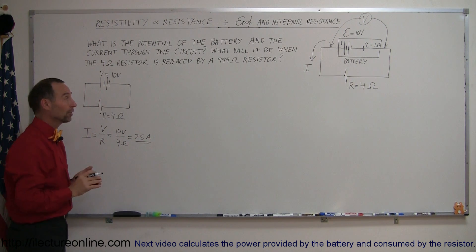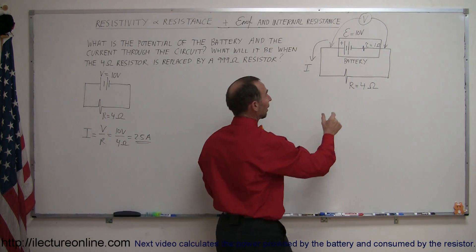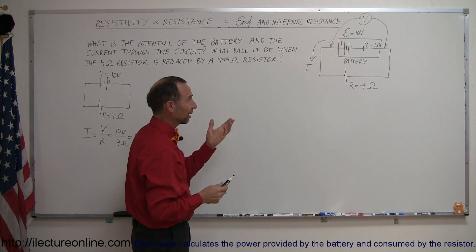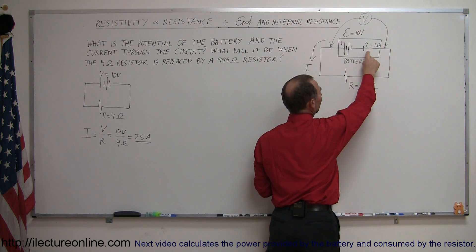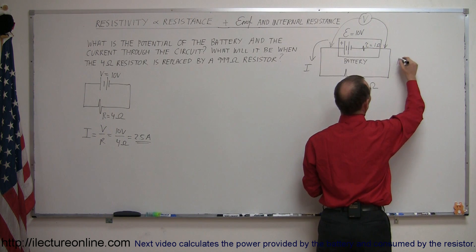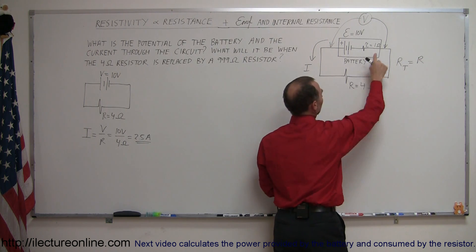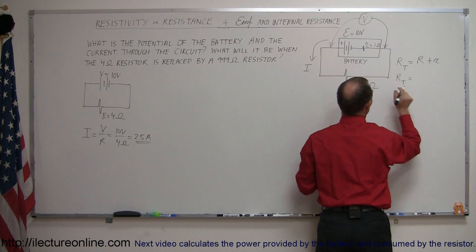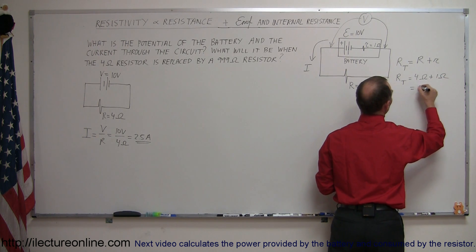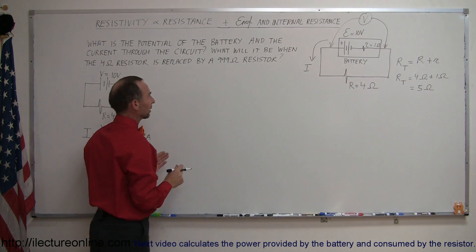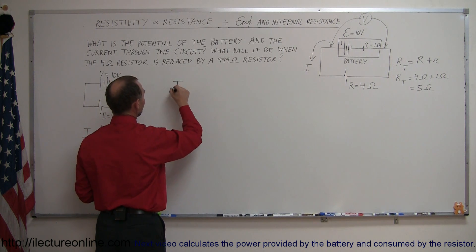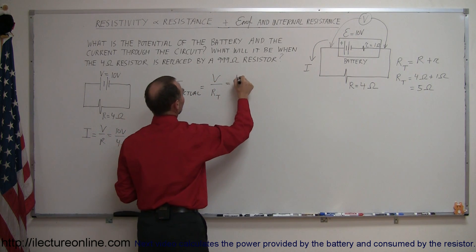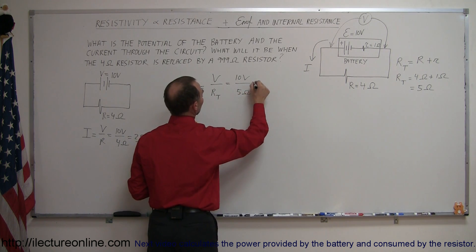But in actuality that is not what's going to happen, because batteries, just like any power supply, have some internal resistance. If you measured the voltage across the battery you'd find something very different. The internal resistance adds to the total resistance of the circuit. So R total equals the load resistor plus the internal resistance — in this case 4 ohms plus 1 ohm, which equals 5 ohms. The actual current I = V / R_total = 10 volts / 5 ohms = 2 amps.